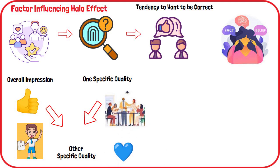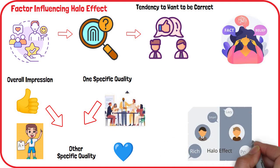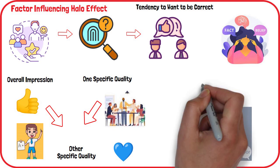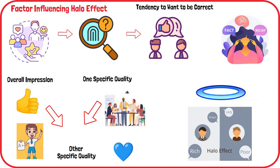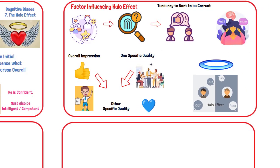The halo effect makes it so that perceptions of one quality lead to biased judgments of other qualities. The term itself uses the analogy of a halo to describe how it can affect perceptions. When you see someone through the lens of the halo effect, you are seeing them cast in a similar light — that halo, created by your perception of one characteristic, covers them in the same way.